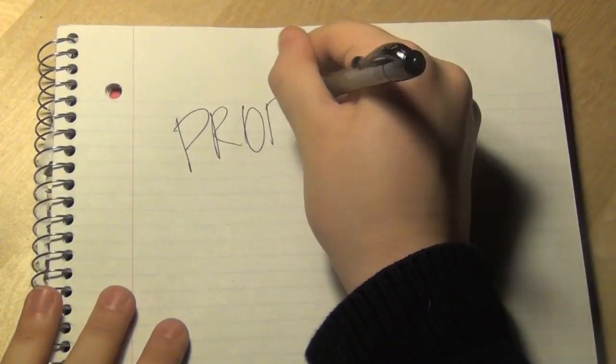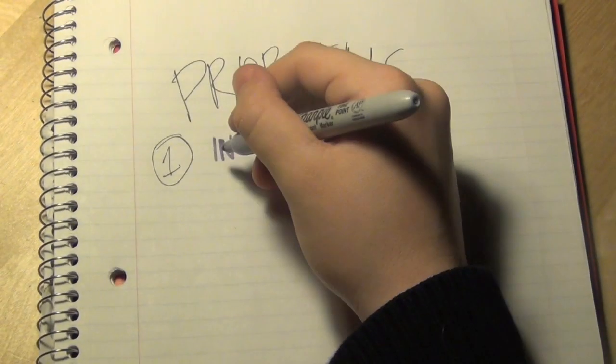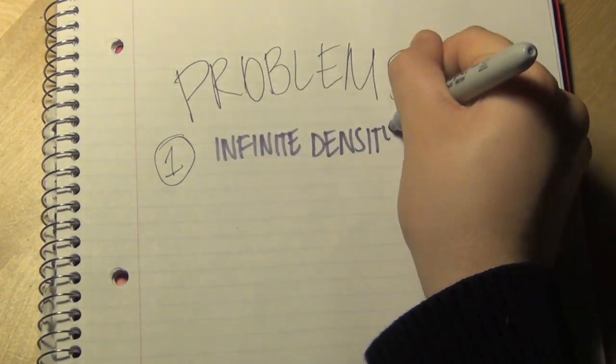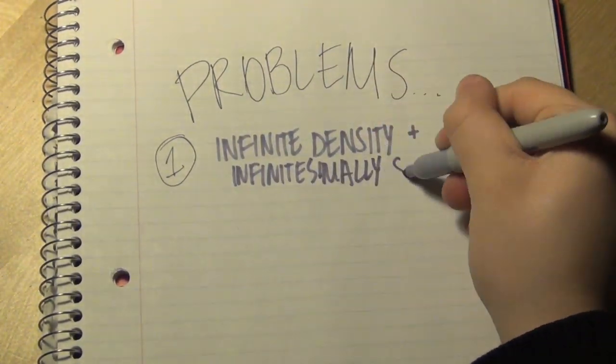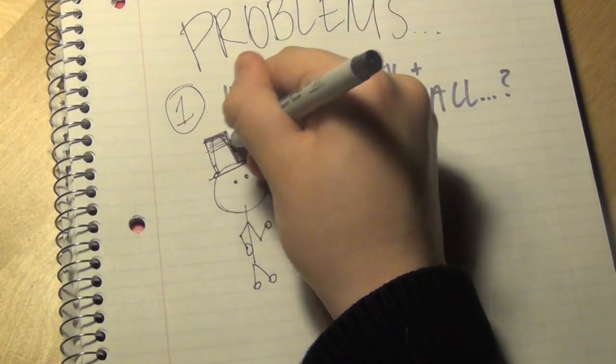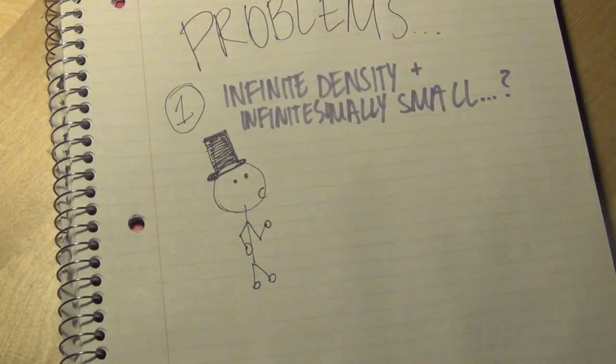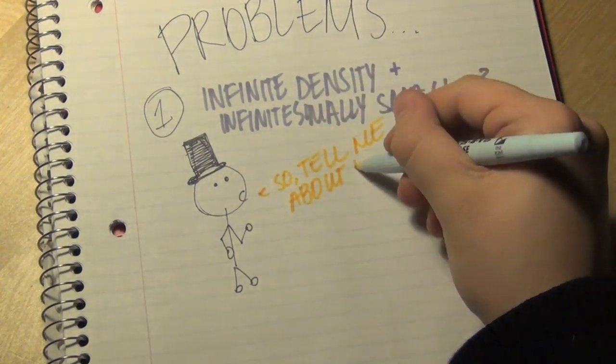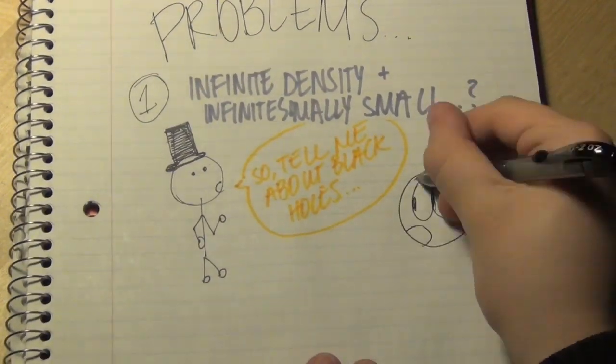If we haven't already run into a bunch of problems, we're about to run into a lot more. For one thing, it's impossible to prove that a point that is infinitely dense but also infinitely small actually exists. I'd like to think about how you could explain this to someone like a historian. So, tell me about black holes. Well, take a point. Any point.